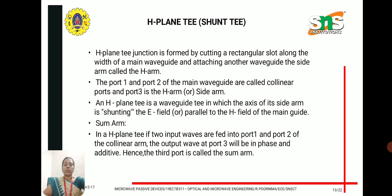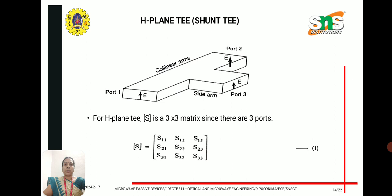Next, we discuss the H-plane T, also known as the shunt T. The H-plane T is formed by cutting a rectangular slot along the width of the main waveguide and attaching another waveguide, known as the H-arm. Comparing E-plane and H-plane T: in the E-plane T the side arm is the E-arm; here it is the H-arm or sum-arm, because the axis of the side arm is parallel to the H-field of the main waveguide. Port 1 and port 2 are collinear arms forming the main waveguide, and port 3 is the H-arm attached to the side.